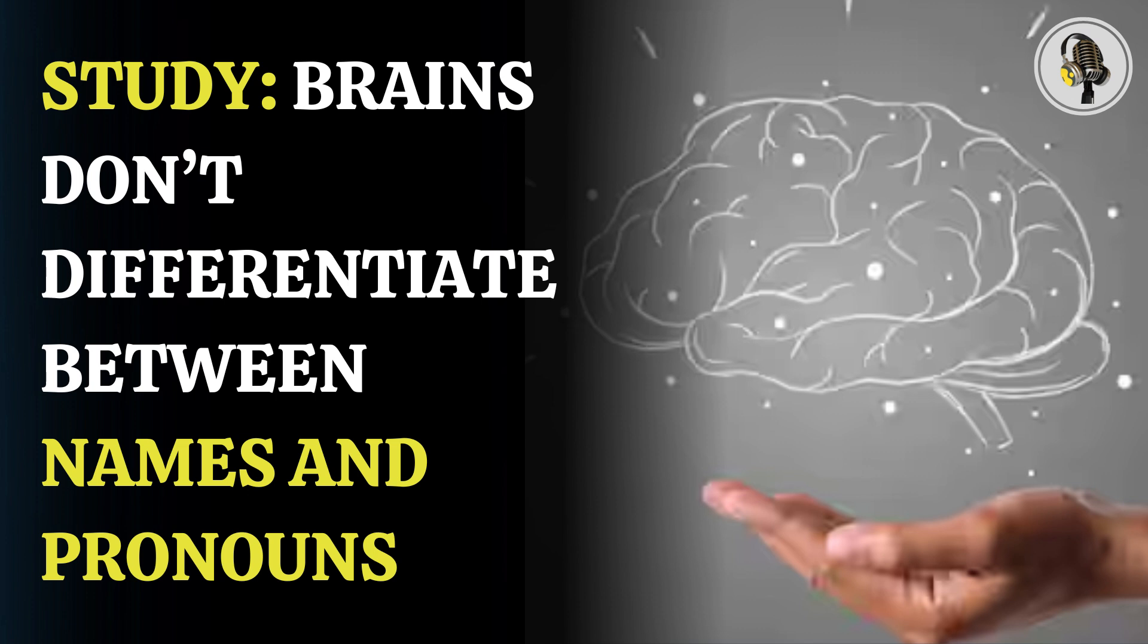According to scientists, there are these so-called concept cells that store information regarding the representations of people, objects, or abstract concepts.